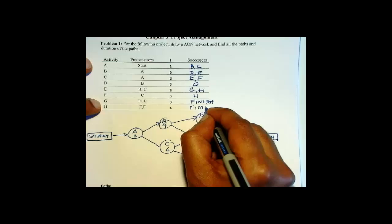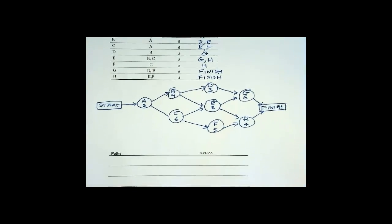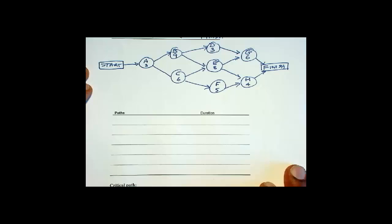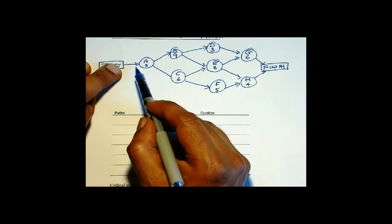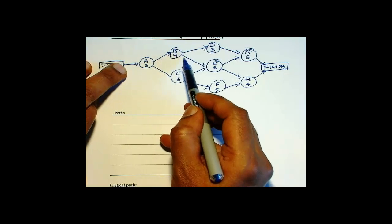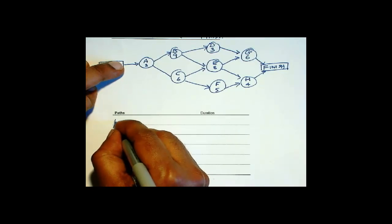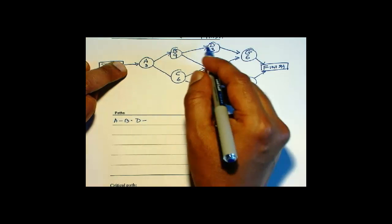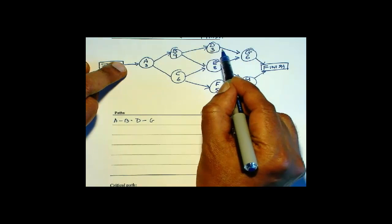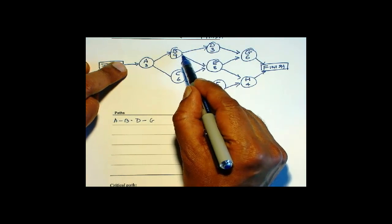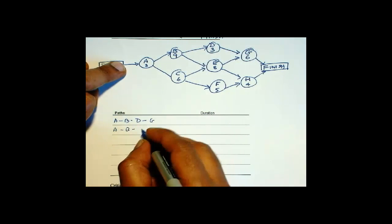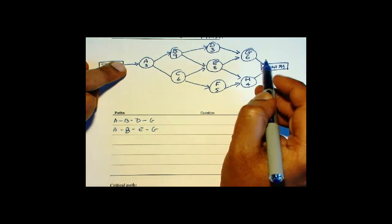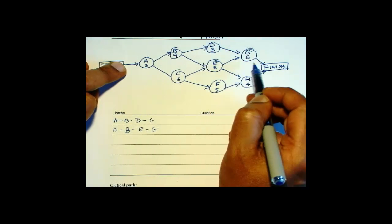Next we have to set up the paths. We need to make sure that we count all the paths and don't miss anything. One way of doing that is to make sure that whenever there is a choice, you take the uppermost arrow. So we have A, B — then we have a choice, so take the upper arrow — D, then G. Then trace back to the last point at which you made a choice and make the other choice. So: A, B, E, G. Now we made a choice at E, so trace back only to E and make the other choice: H.